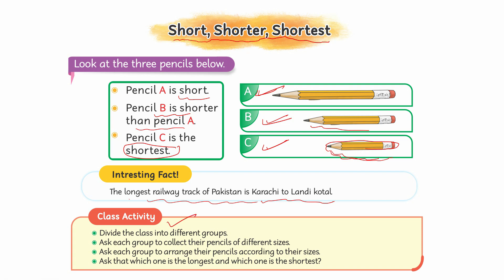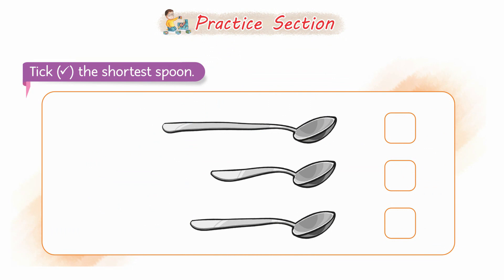अब ये छोटी सी class activity है जो कि आपने अपनी class में perform करनी है। इसी से related हम अपनी practice section पर चलते हैं। Practice section का ये वाला question अब करेंगे — spoon वाला। Question है: Tick the shortest spoon — यानि सबसे छोटे spoon को tick करना है।